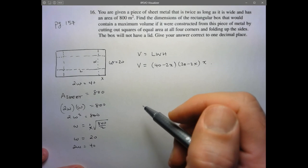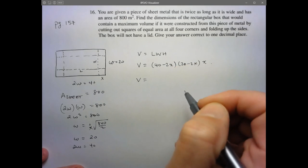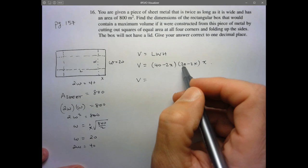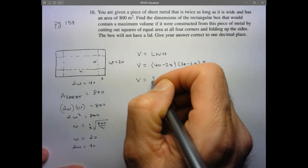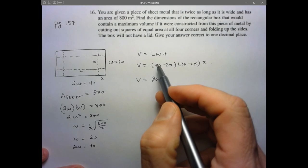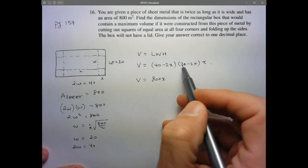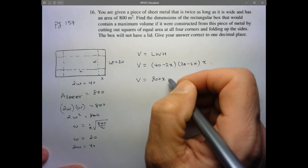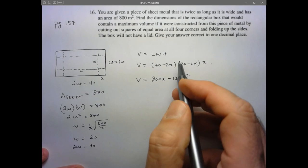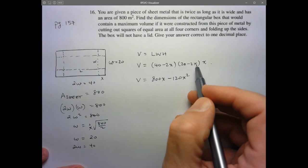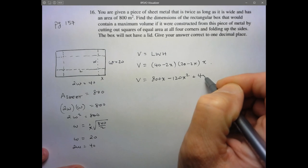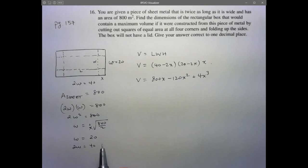Let's expand it before we find the domain here. We have 40 times 20 is 800. Don't forget the times x, so 800x. Then we have negative 80 minus 40, so negative 120x. And then times another x, so x squared, so minus 120x squared. And then negative 2x times negative 2x is 4x squared. And times the other x, so plus 4x cubed. And there's my model.